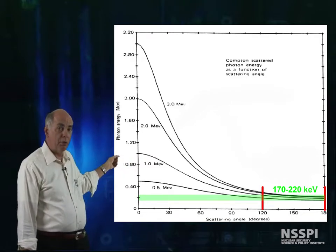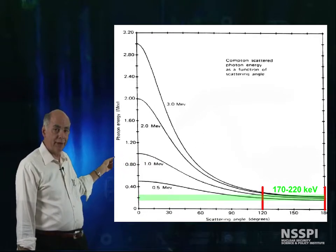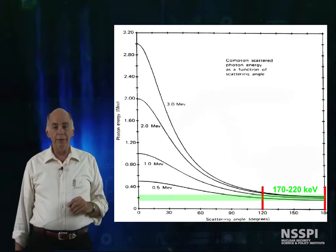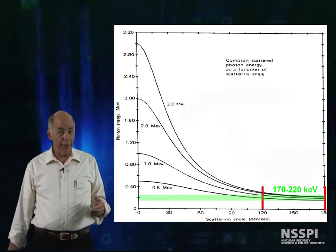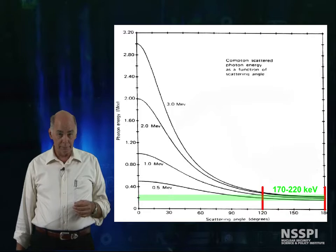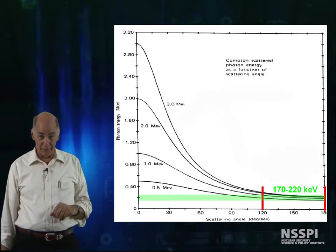This is important for Uranium-235 counting, because the principal identification energy is 186 keV. I'll show you an example of backscatter peak in a moment.